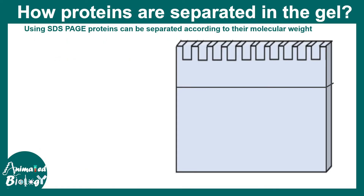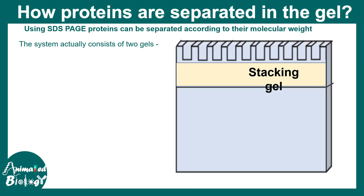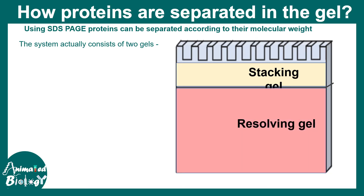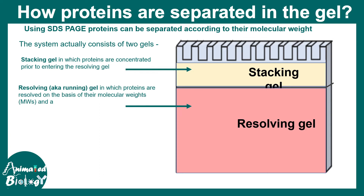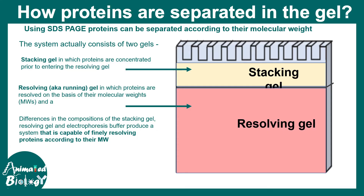Now let's see how proteins are actually separated in the gel — the chemistry and biology behind that. The SDS-PAGE gel has two components: a stacking gel and a resolving gel. The stacking gel is a portion where proteins are concentrated prior to their run in the resolving gel. The resolving gel is the portion where proteins are actually separated on the basis of their molecular weight. Understanding the differences in composition between these two gels is really important.